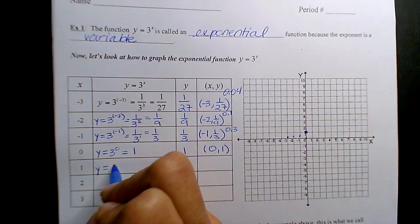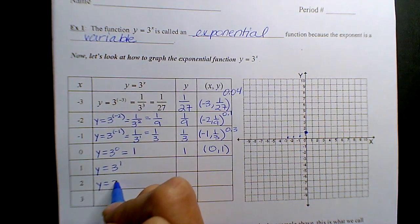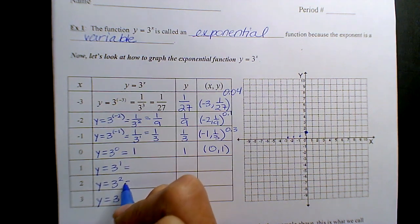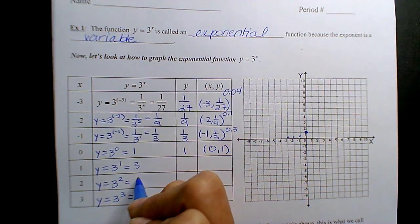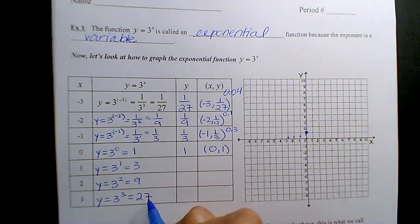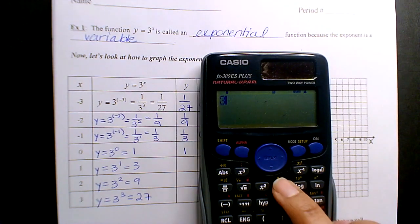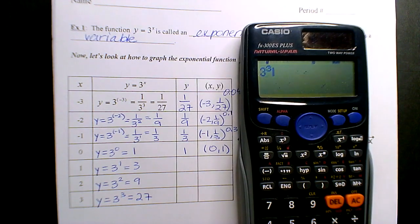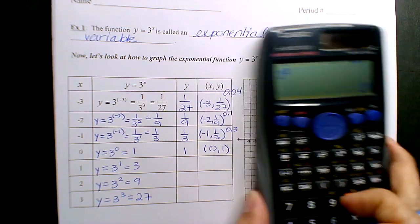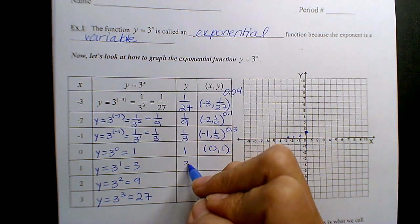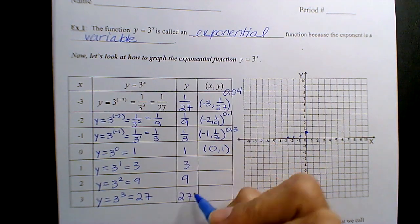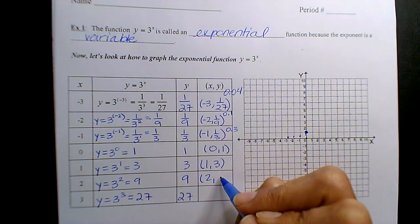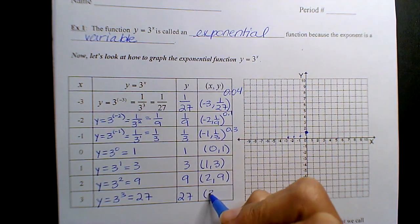Keep going. 3 to the 1, 3 to the 2, 3 to the 3. Throw that in. So this is 3, 9, 27. There's your 27.